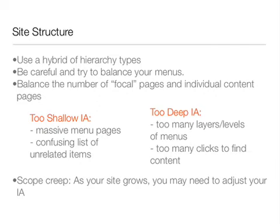When you try to emphasize too many pages, you usually end up with an IA that is too shallow. You have massive menu pages, and all the user sees is a confusing list of unrelated terms. If they have to try too hard to find what they're looking for, they will leave. On the other hand, you can design IA that has too many layers or levels of menus. In that case, it takes many clicks for the user to find what they're looking for. Try to give the user as direct a route as possible.